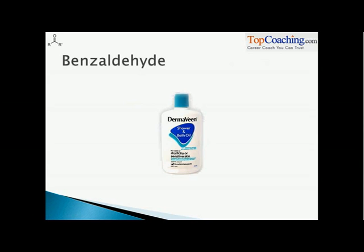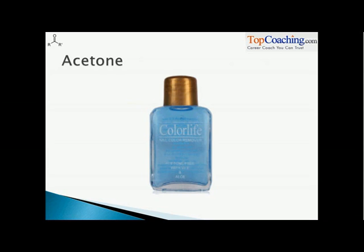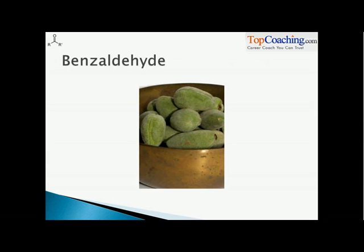In our bath oils or shower gel, we have an amount of benzaldehyde. This is a nail paint remover — acetone is the ketone that you are actually using when you are removing your nail paints. As I told you, benzaldehyde is also known as oil of bitter almonds, and it is used to flavor eatables with almond flavor.